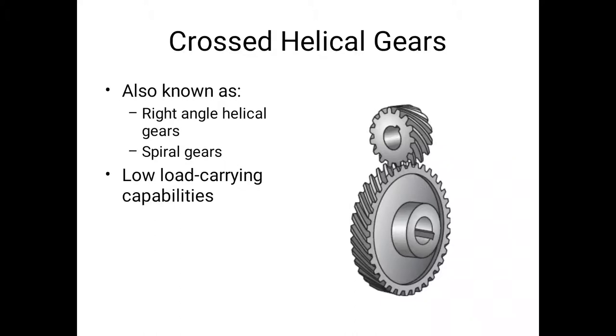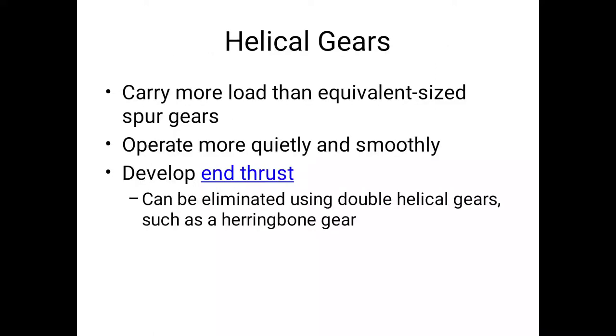Crossed helical gears, also known as right-angled helical gears or spiral gears, have low load-carrying capacity. Helical gears carry more loads than equivalent-sized spur gears, operate more quietly and smoothly. They develop end thrust, which can be eliminated using double helical gears such as herringbone gears.